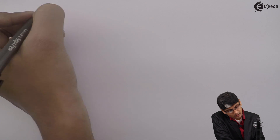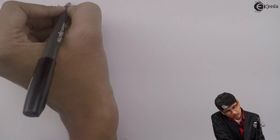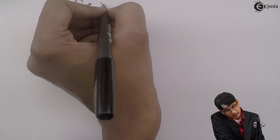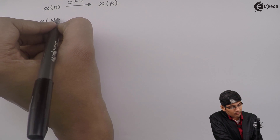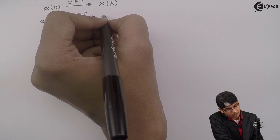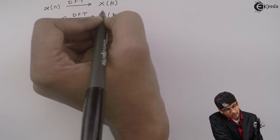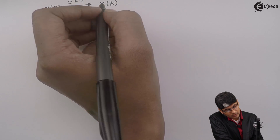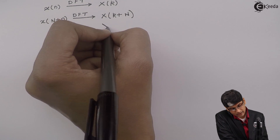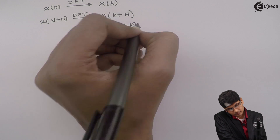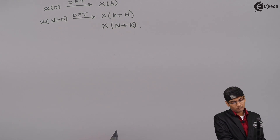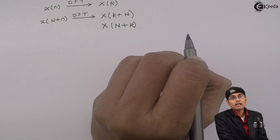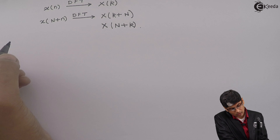Now, if I take the DFT of such a periodic signal x(n), I will get X(k). And if I take the DFT of x(n+N), then X(k) will also be periodic, giving X(k+N). So if x(n) is periodic, then X(k) will also be periodic — that is the second property, called the periodicity property.